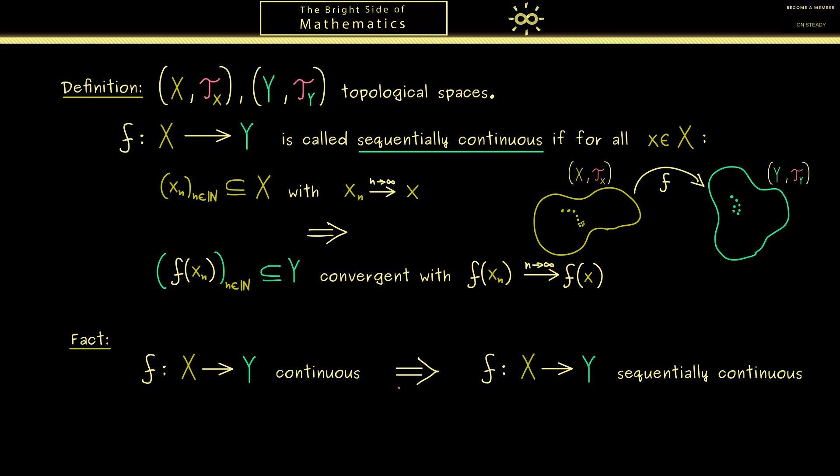However we already know that we have the equivalence for special cases. For example, when you have watched my functional analysis course you know this equivalence holds in metric spaces. Indeed one can show this equivalence holds in all so-called first countable spaces. However we didn't discuss them but we discussed the second countable spaces. And because they form a subset of the first countable spaces we also have the equivalence for the second countable spaces.